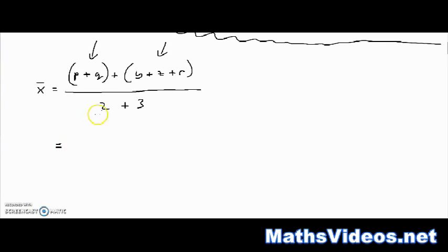But, p plus q is actually equal to n1 multiplied by the mean of the data set x1. And, y plus z plus r is actually equal to n2 multiplied by the mean of the data set x2. And, 2 is actually equal to n1, and 3 is actually equal to n2.